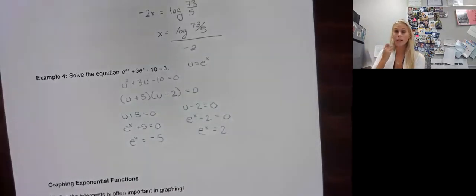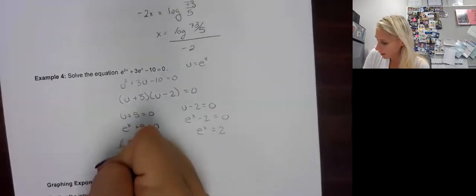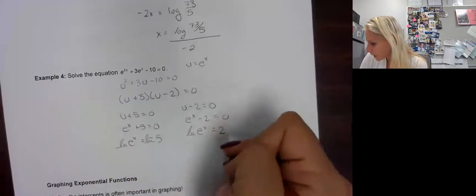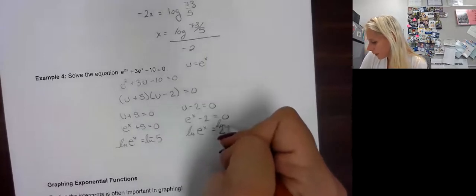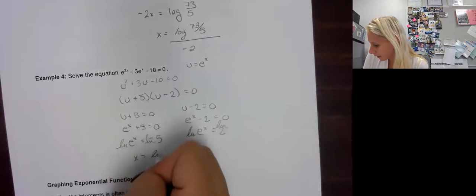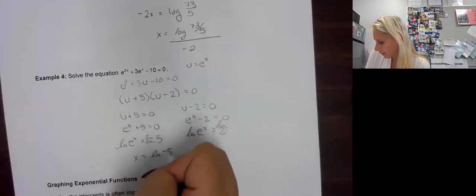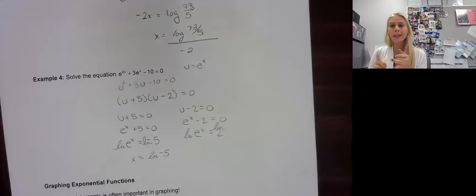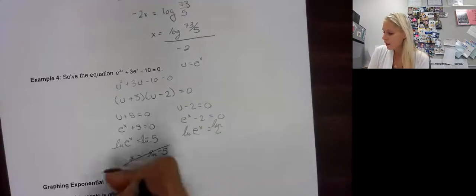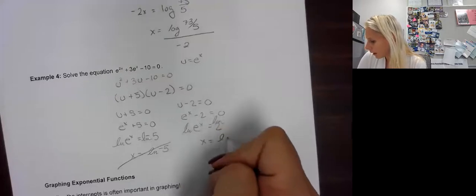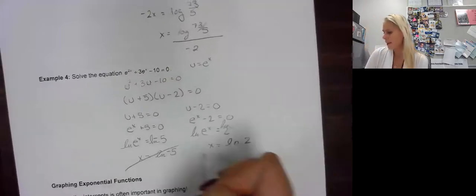So now I get e to the x equals negative 5 and e to the x equals 2. Well, how did we get rid of e to the x? Natural log both sides. So I'm going to write this out, but I'm hoping you're coming up with the conclusion here. We get x equals ln negative 5. And I'm hoping right now you're getting like this, no, no, no, no, it can't be negative. Remember, in ln's and logs, it can't be negative and it can't be 0. So we can cross that answer out. But in this one, we have x equals ln 2. And there is our answer.